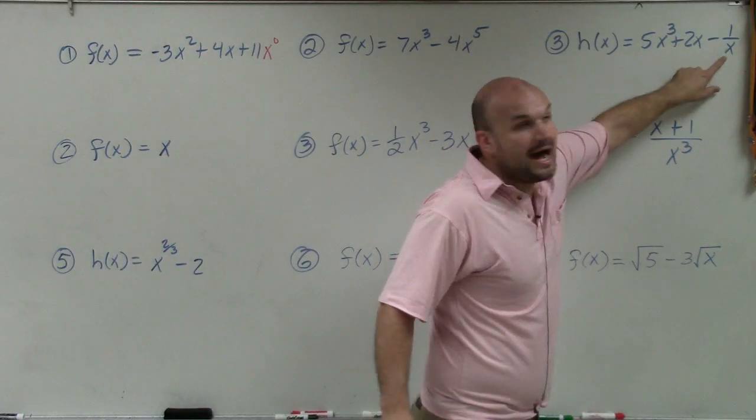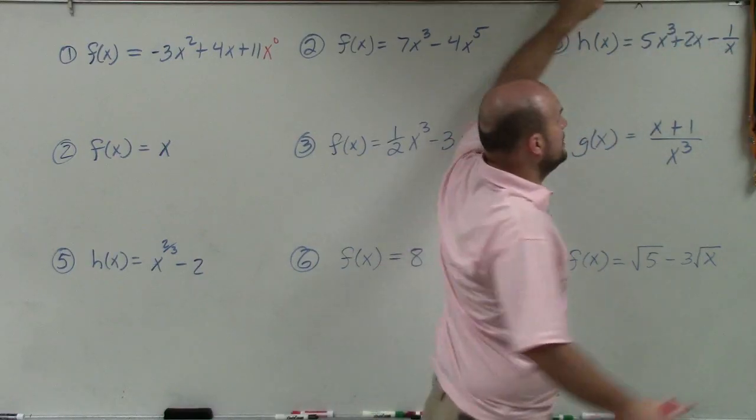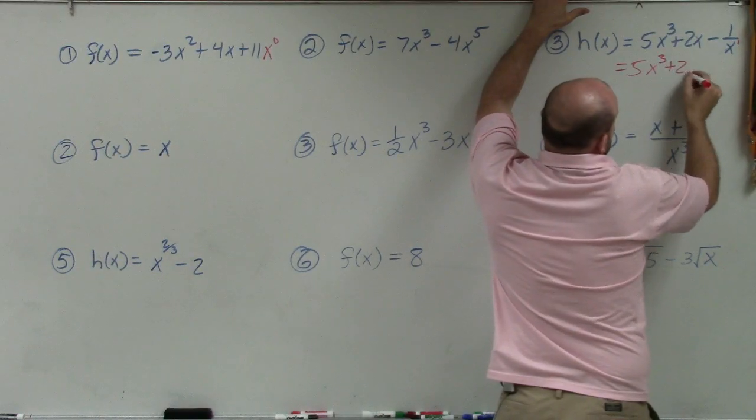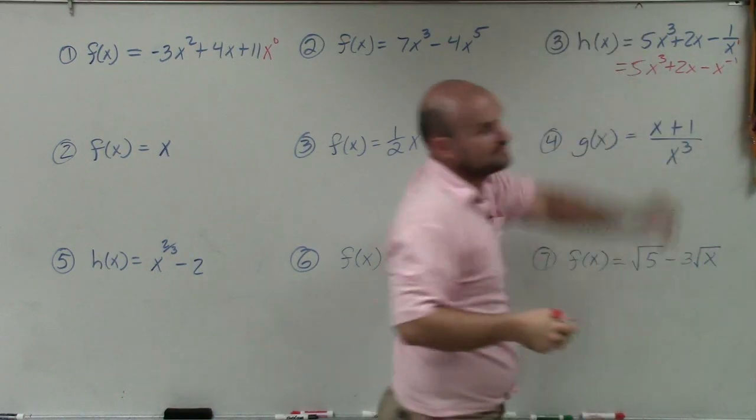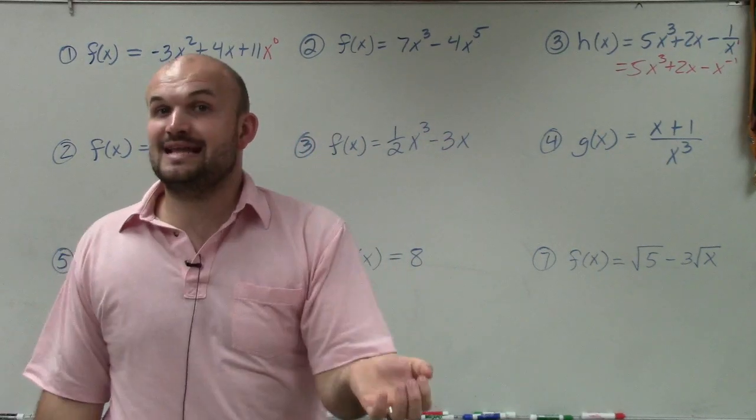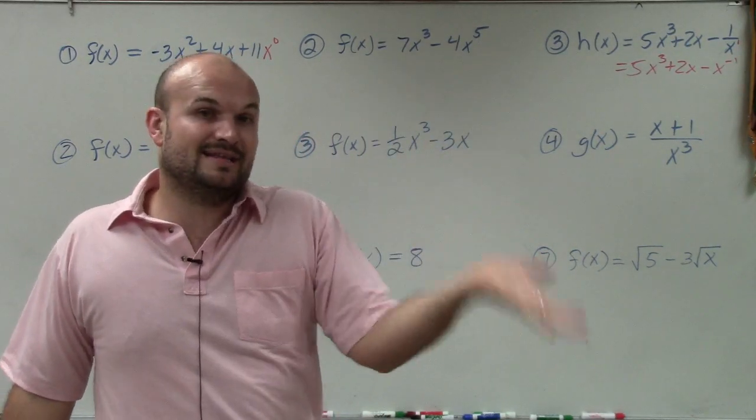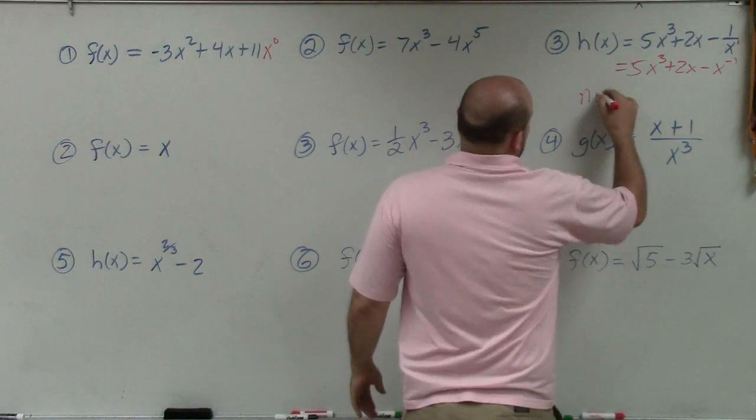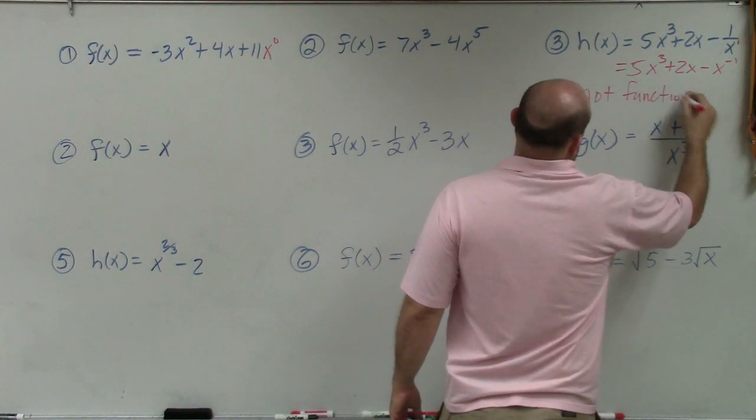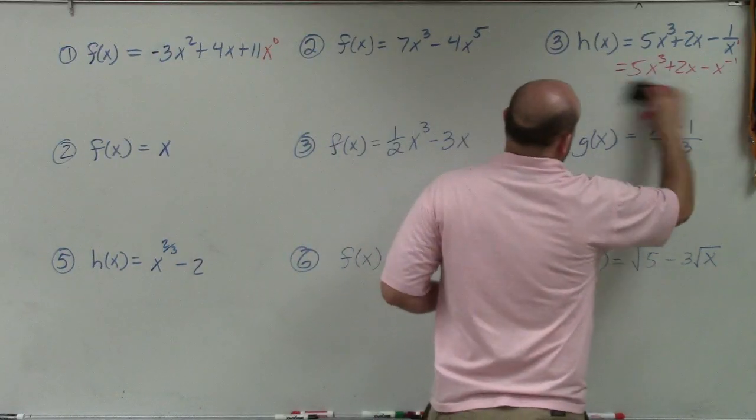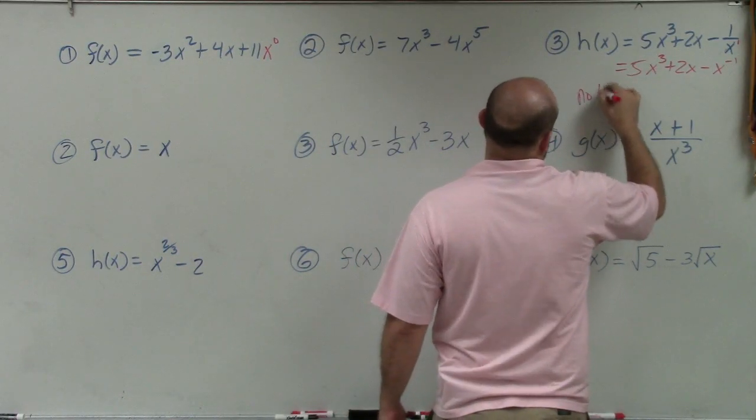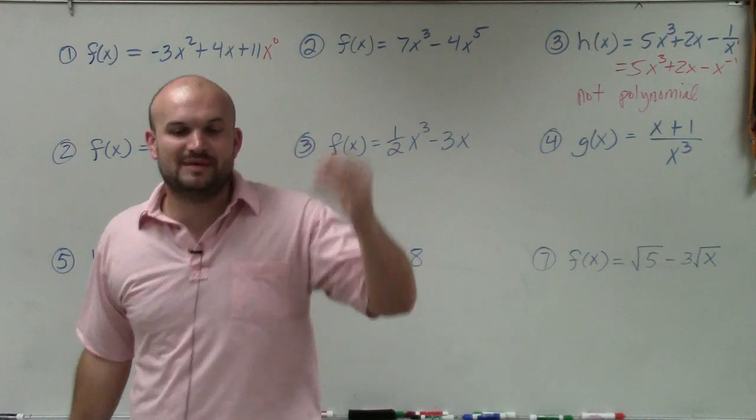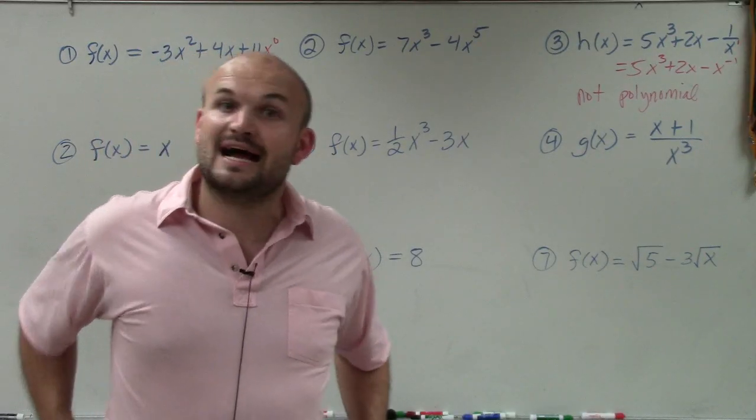Over here, we have a problem where the power is not a non-negative integer. When we rewrite this, 5x cubed plus 2x minus x to the negative first, because when we rewrite a variable in the denominator, we rewrite it in the numerator with a negative power. Therefore, this is not a polynomial. Any time you see a variable in the denominator, it's going to be basically a negative power, so it's not going to be a polynomial.